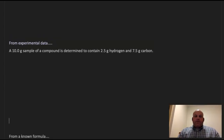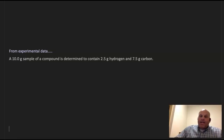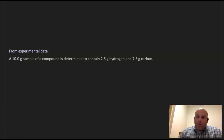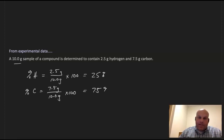Let's first focus on problems from experimental data. A 10 gram sample of a compound is determined to contain 2.5 grams of hydrogen and 7.5 grams of carbon. Like any percentage we're going to calculate, it's part over the whole. So the percent of hydrogen would be 2.5 grams over the total mass of 10.0 grams times 100, giving 25% hydrogen. The percent of carbon would be 7.5 grams over 10 grams times 100, giving 75% carbon.